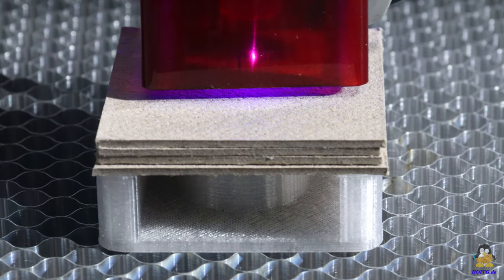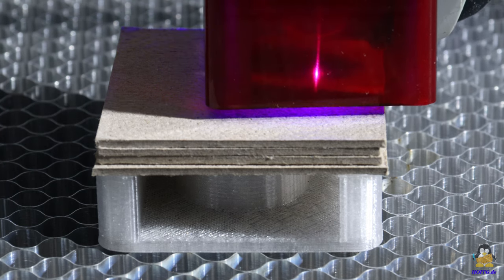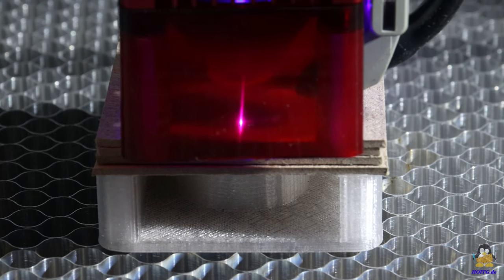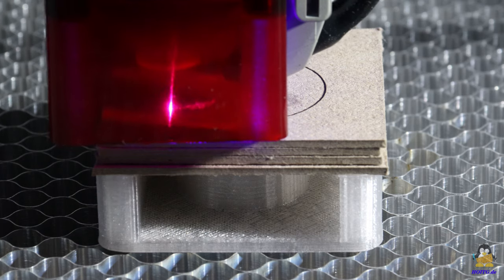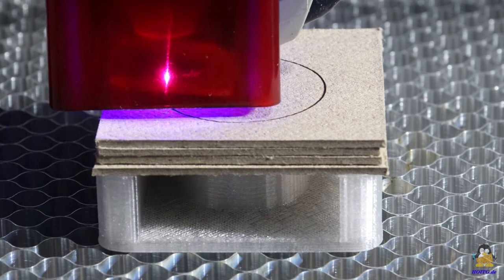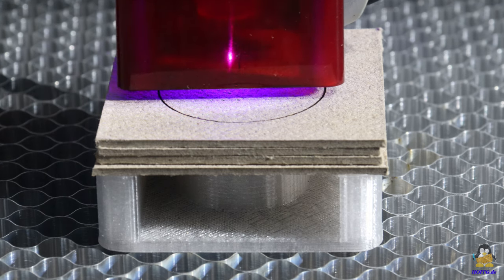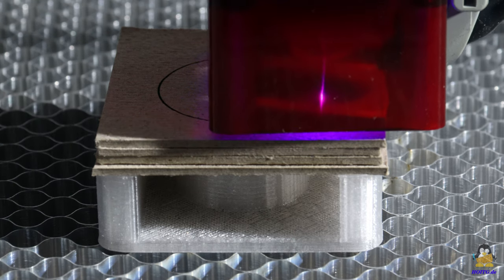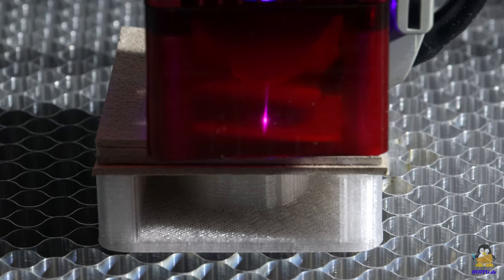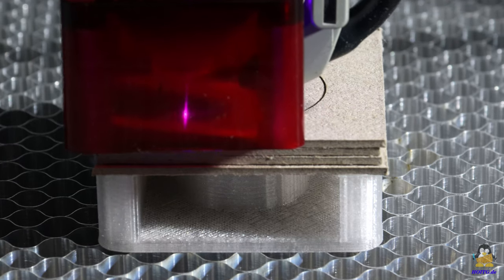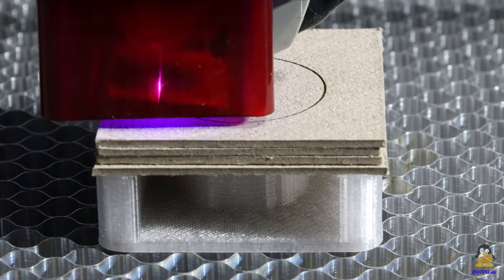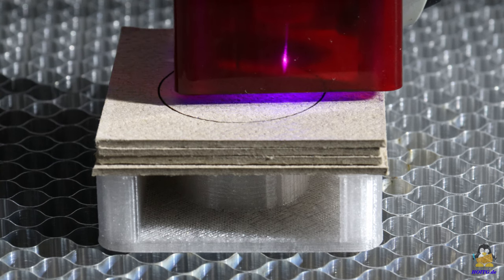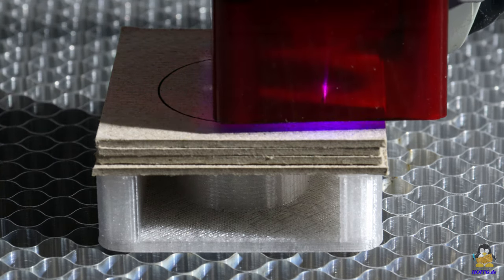A stack of four pieces of 2mm cardboard shows the limit of the cutting performance. Here too, the laser power is set to 80% while the cutting speed is 300mm per minute. Again, three passes are executed.